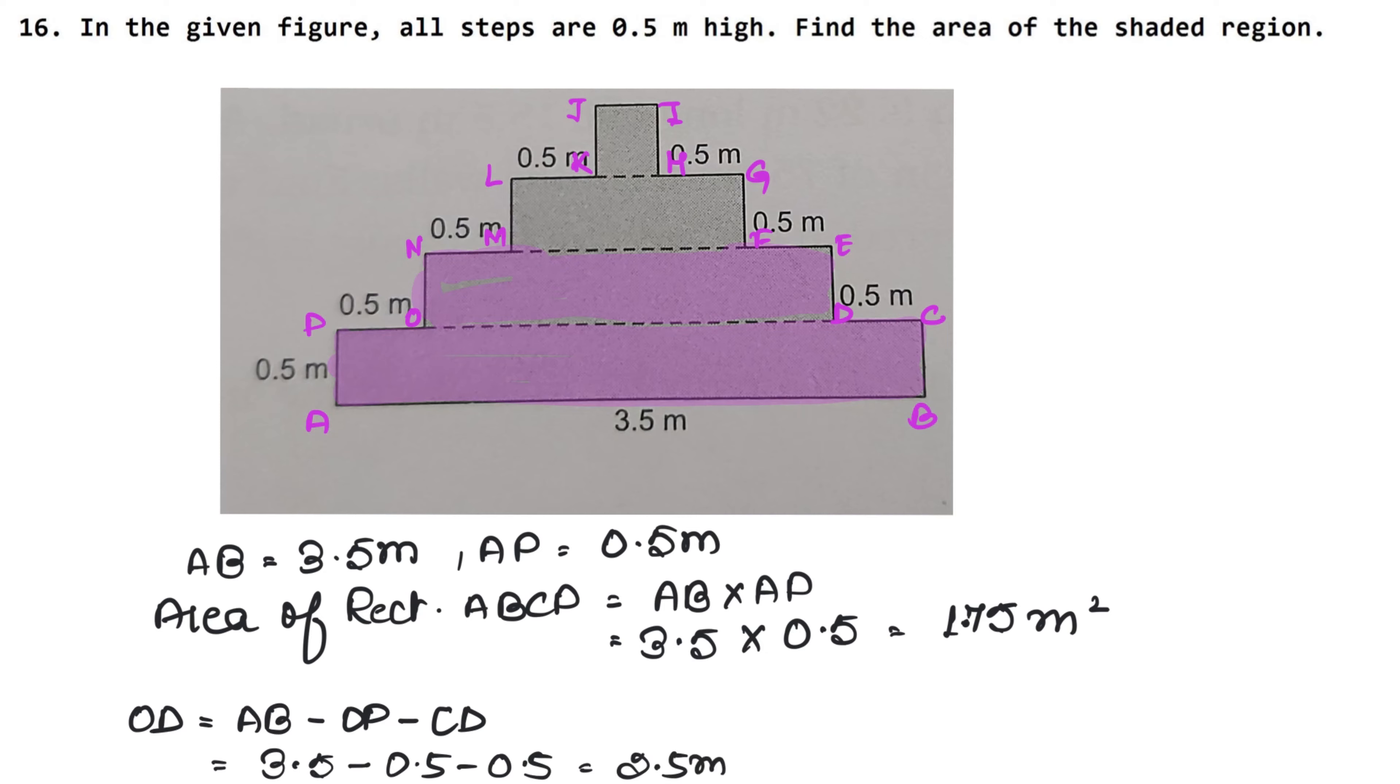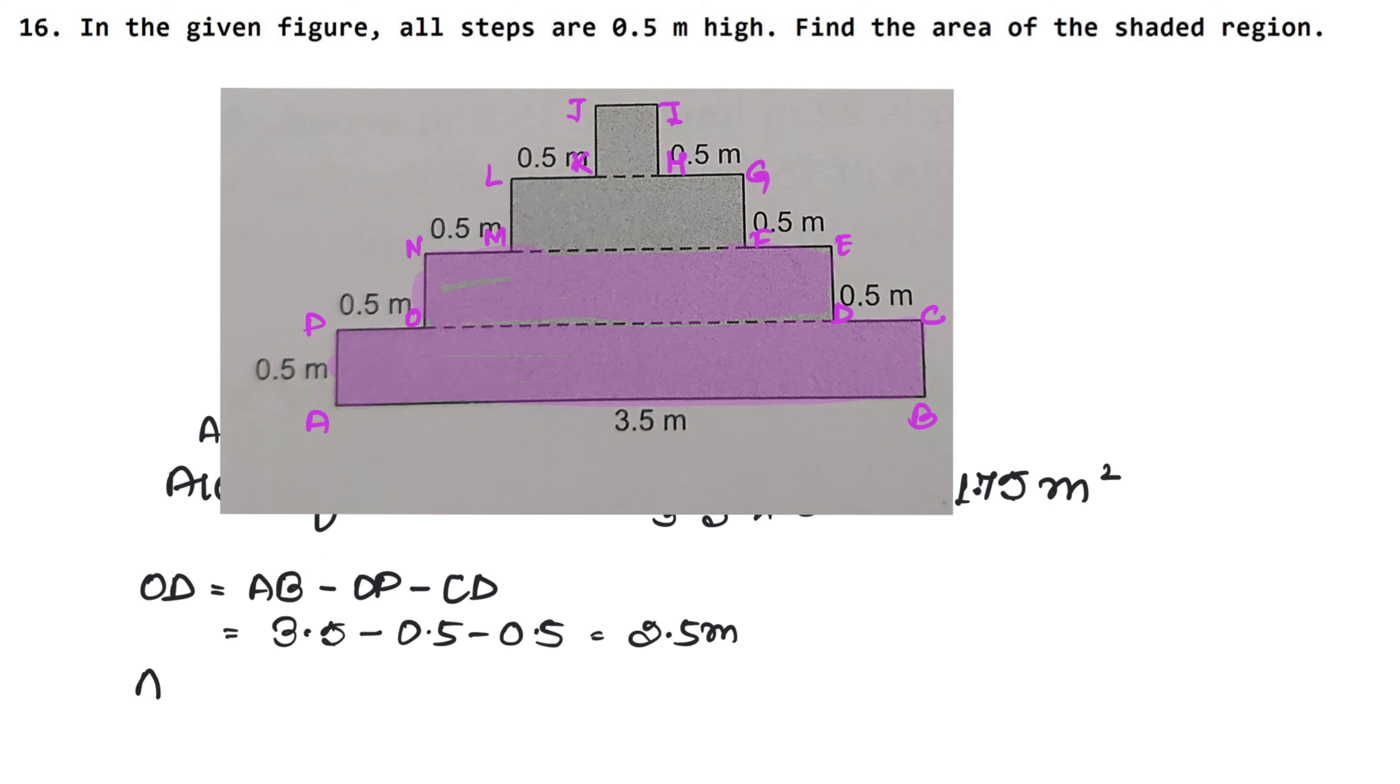Now we will find the area of rectangle ODEN. How is it? OD into DE or EN. OD is 2.5 and we know that 0.5 meter is high. Now, 25 times 5 is 125, and 1 here and 1 here is the point, so 1.25 meter square. Now second stairs, now we will remove the third stair.